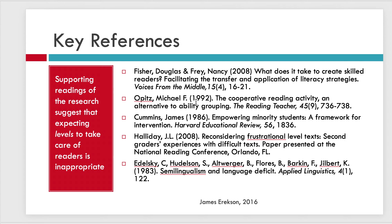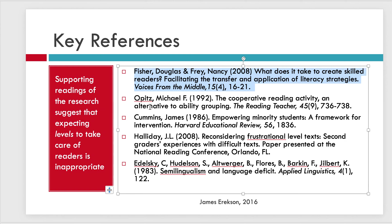Key references: 'What does it take to create skilled readers?' — there's a lot from Fisher and Frey on middle school and upper elementary readers. Michael Opitz's article on cooperative reading activity, which is an alternative to ability grouping — use this technique to regroup kids around the same passage instead of ability groups. Jim Cummins' original articles on BICS and CALP. Juliet Halliday on how to reconsider frustrational text levels and help kids approach difficult texts. And Edelsky, Hudelson, Altwerger, Flores, Barkan, and Gilbert on semi-lingualism and the language deficit — ideas on helping kids see that their basic street language knowledge can help them get to academic language as well.